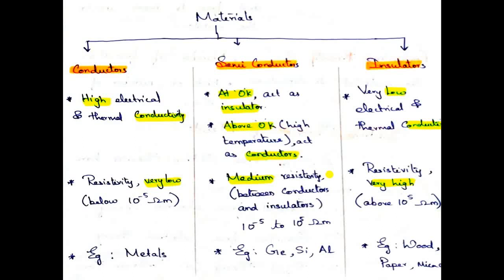What are conducting materials? If the material permits electrical power or heat to pass through it, that material is called a conductor. If the material does not permit electricity or heat to pass through it, it is known as an insulator. Semiconductors are materials which can act as both in different cases. At absolute zero, that is 0 Kelvin, it will act as an insulator. At temperatures above 0 Kelvin, it will act as a conductor.